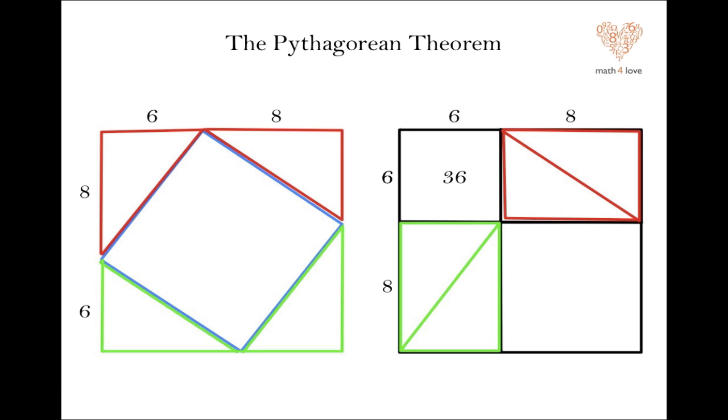There's that little square is six by six, which is 36. The big one is eight by eight, which is 64. So that one should just be the sum of those two. The triangles are added and then subtracted. So they cancel out.